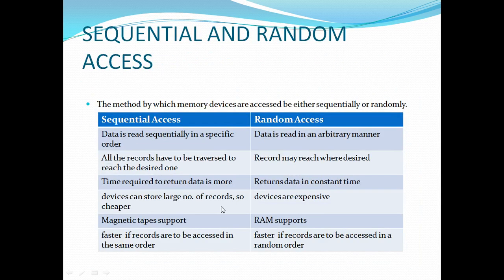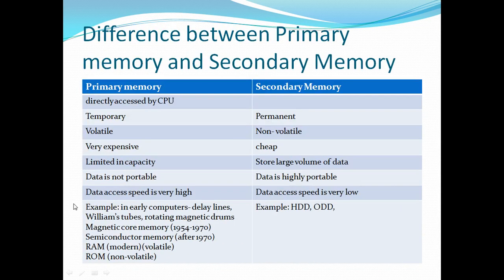Examples of primary memory: in early computers, delay lines and vacuum tubes were used, then rotating magnetic drums and magnetic core memory from 1954 to 1970. After that, semiconductor memory was used. Now RAM is used as primary memory, which is volatile, and also ROM — read only memory — which is non-volatile. ROM is also primary memory but it is non-volatile.